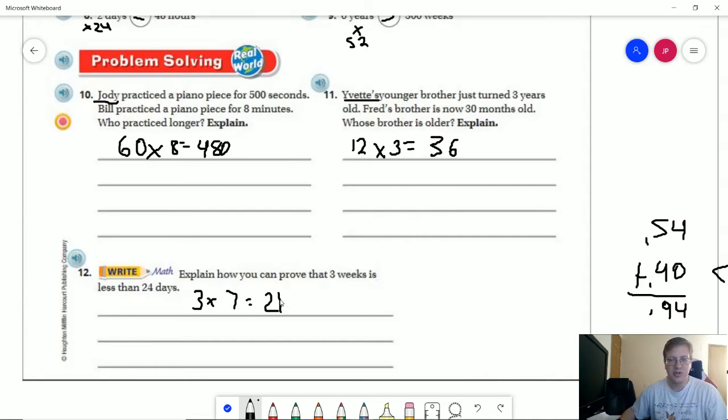For number 12, explain how you can prove that three weeks is less than 24 days. Well, we can simply do three weeks times seven days to get 21 days. And that would be the way that we would know the answer to that.